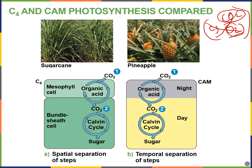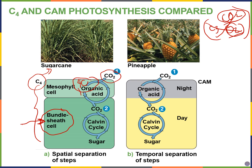C4 plants like sugarcane have adapted to overcome photorespiration. They have another set of cells called bundle sheath cells, and rubisco is located within those bundle sheath cells. When CO₂ comes in through the stomata, it turns into a four-carbon molecule first using a different set of enzymes. This four-carbon molecule is shuttled into the bundle sheath cells where rubisco is found, so rubisco is not exposed to oxygen and can carry out the Calvin cycle instead of photorespiration.